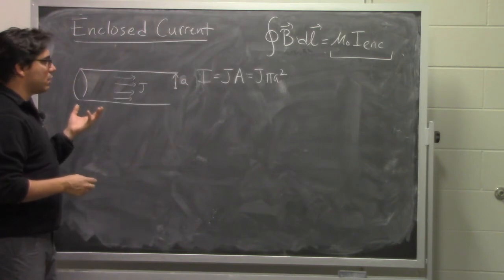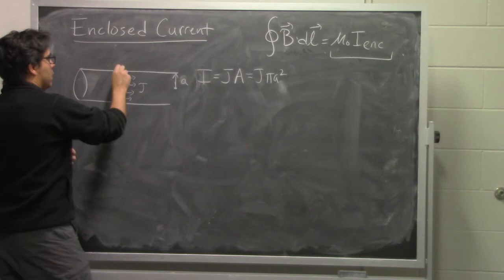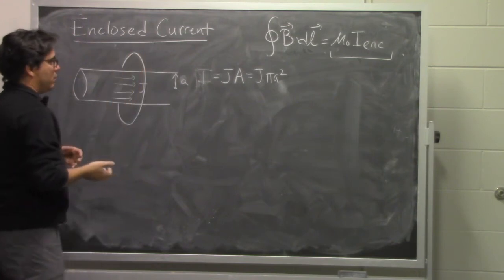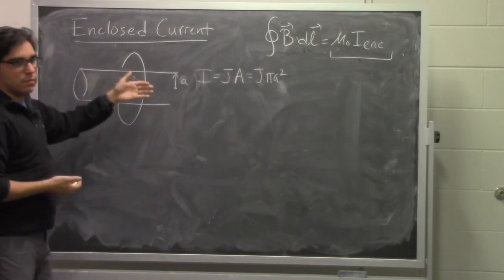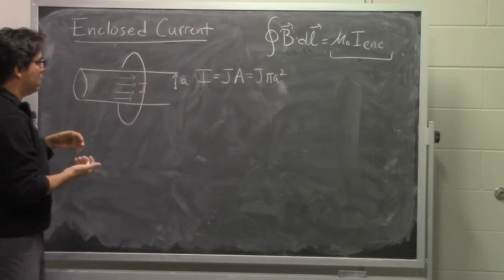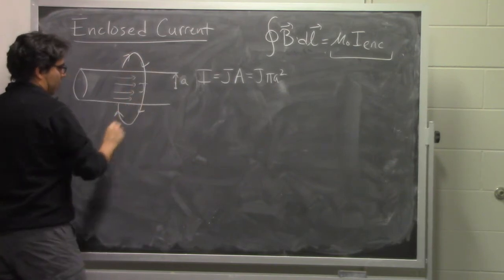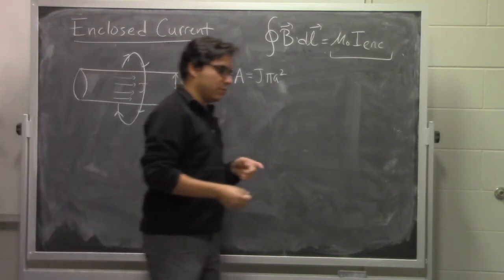We're going to calculate what the magnetic field is by taking a loop that goes around the wire like this. So if we know that the current points from the left to the right, then we want to go around the loop in this direction, because that would be the direction that the magnetic field points.